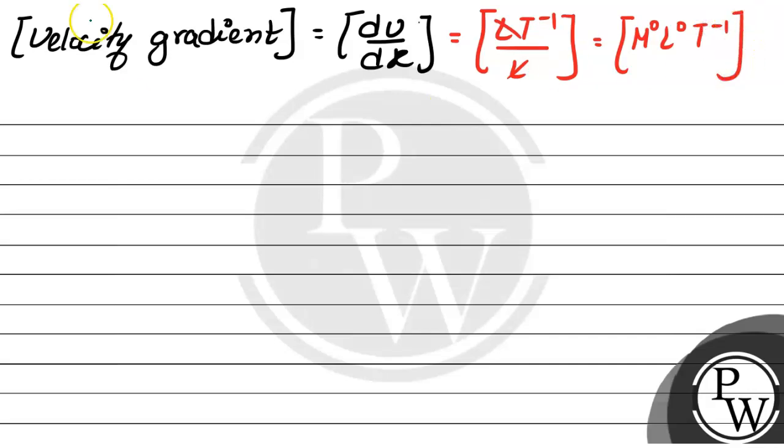Now let us move to decay constant. The dimension of decay constant equals the dimension of lambda, which equals the dimension of 1/n times dN/dT.